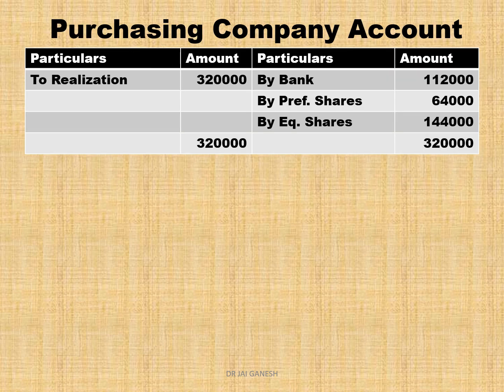Purchasing company account — on the debit side, write 'To Realisation Account Rs. 3,20,000'. This is the purchase consideration paid by the company. The firm receives the PC, so it comes on the debit side of the purchasing company account, and on the credit side of the realisation account we write 'By Purchasing Company'.